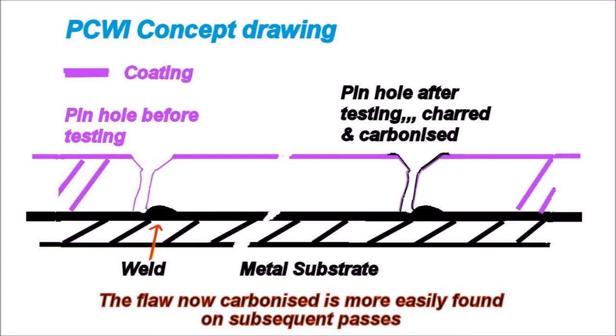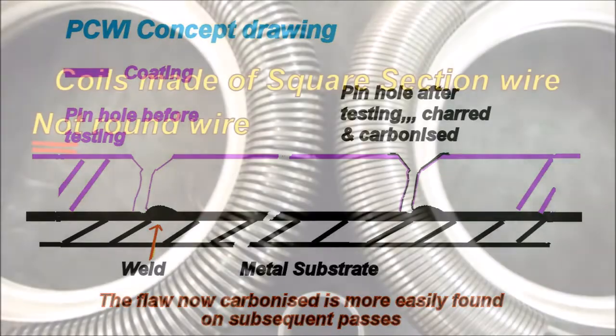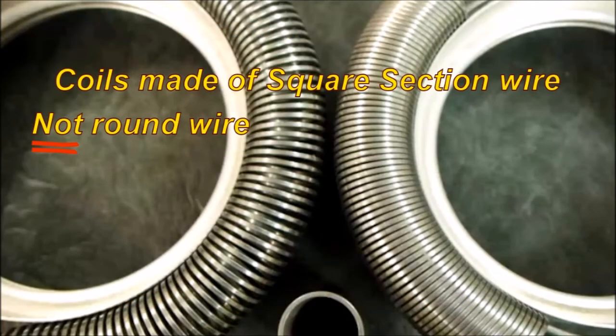Well, it depends on the voltage setting. If you've got low voltage settings, it's going to be harder to find, but very easy to find second time around. The coils we have are made of square section wire and definitely not a round wire.